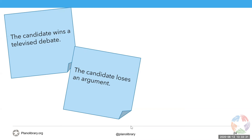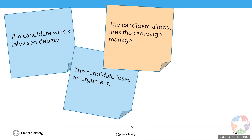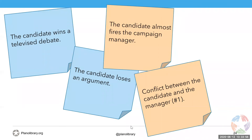Another example: 'The candidate almost fires the campaign manager' — it's a fallout between the hero and the sidekick. If we want this scene to have emotional impact and be rich in context, we really should have another event: earlier on, the candidate and the manager already had a smaller conflict, so it's a buildup, not something that came out of the blue.